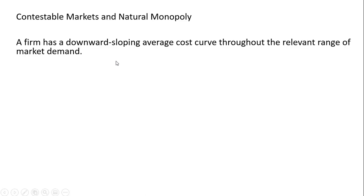Let's think about a contestable market and a natural monopolist. A natural monopoly is a firm with a downward sloping average cost curve throughout the relevant range of the market demand curve.